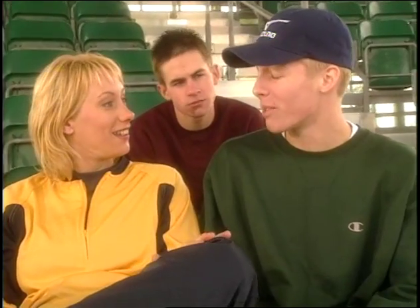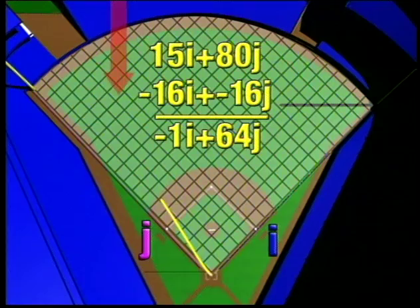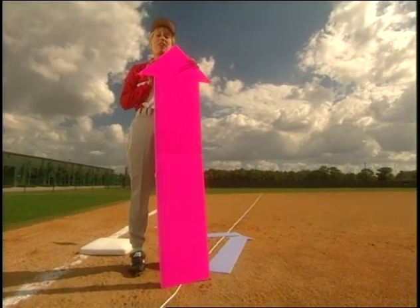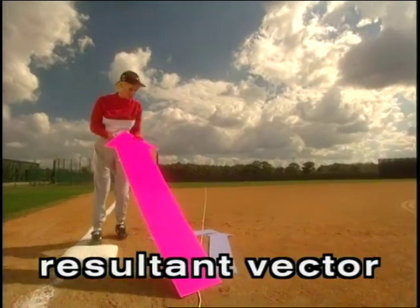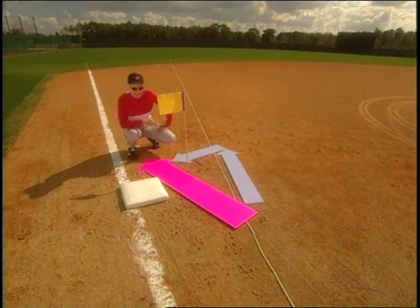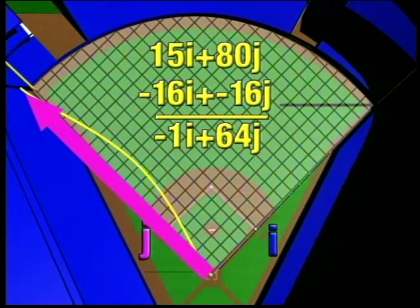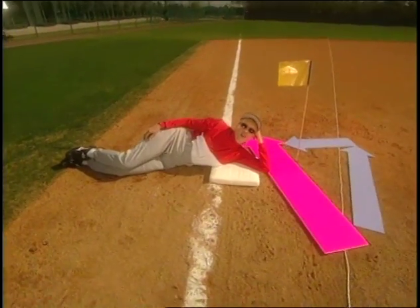So now we have the wind's vector: negative 16i plus negative 16j. The great thing about vectors is you can add them — just add the i components and the j components. All we do is add the vector components together to get the wind's effect on the ball, and we get negative 1i plus 64j: a new vector that shows how the ball will be traveling with the effect of the wind. When we add vectors together, the answer is called the resultant vector. We always use a bolder arrow to indicate the resultant. Our resultant vector shows us that with the wind, the ball's going to just barely go foul. Thanks to vectors, we can quickly see that if the i component of the wind is greater than 15 feet per second, it will push the ball foul. Vectors make it all really easy.